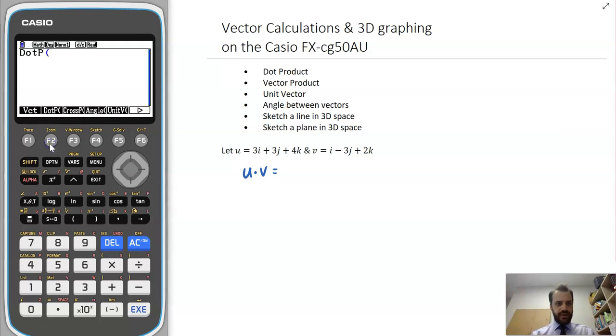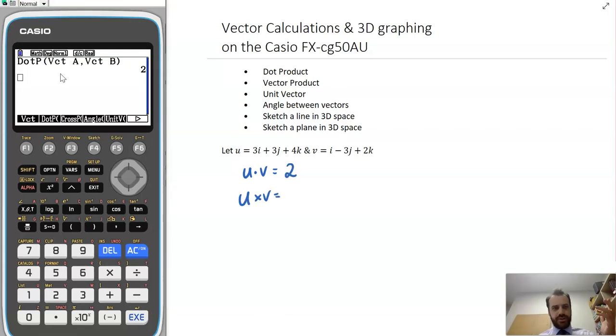So I can click on the dot product here. And now I can click vector alpha A, and then comma vector alpha B. And now that's going to find the dot product of those two vectors. There the dot product is 2.